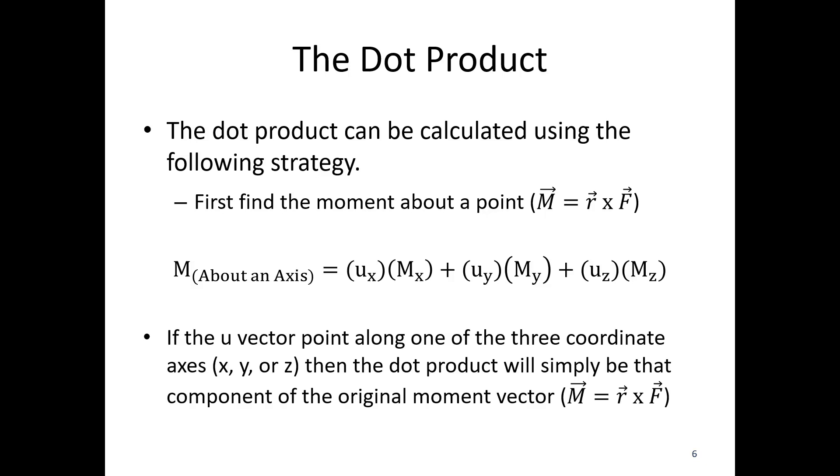If the u unit vector points along one of the three coordinate axes, so if it's in the x direction or the y direction or the z direction, all the dot product is really going to do is pull out the x, y, or z component of this moment vector that I got from r cross F.